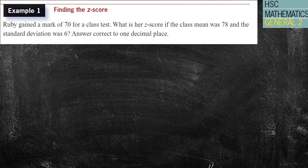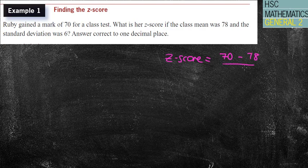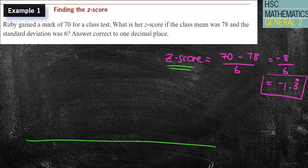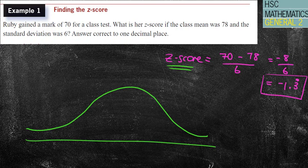Let's look at a question. Ruby gained a mark of 70 for a class test. What is her Z-score if the class mean was 78 and the standard deviation was 6? Using the formula: score of 70 take away mean of 78 gives minus 8 below the mean. Divide that by 6 and we get negative 1.3 recurring. That's not a bad way to do it, however I want to also look at the bell curve — though for this question it's going to be a bit of a nasty Z-score.